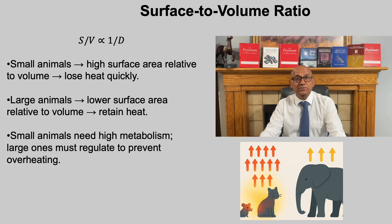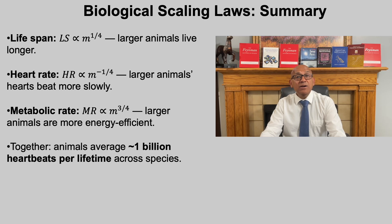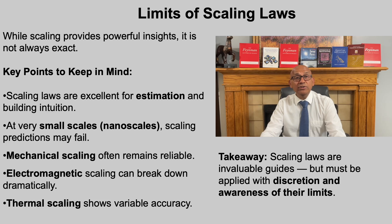When we put these laws together, we see a remarkable unifying picture: life span increases with mass to the one-fourth power, heart rate decreases with mass to the negative one-fourth power, and metabolic rate increases with mass to the three-fourth power. These separate relationships combine to reveal one of biology's most fascinating constants — across species, animals average about one billion heartbeats in a lifetime. Whether it is a mouse, a cat, a human, or an elephant, the total number of heartbeats remains roughly the same. Scaling gives us the lens to see the hidden order connecting all forms of life.